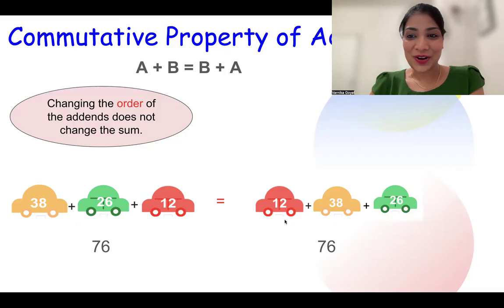So actually changing the order did not change the sum. But why is the commutative property called commutative? It comes from the word commute. Commute means to move around. So just see how the addends or the numbers move around from their place. The red car 12 came at the front but it did not change the sum. Hence this property is called commutative.